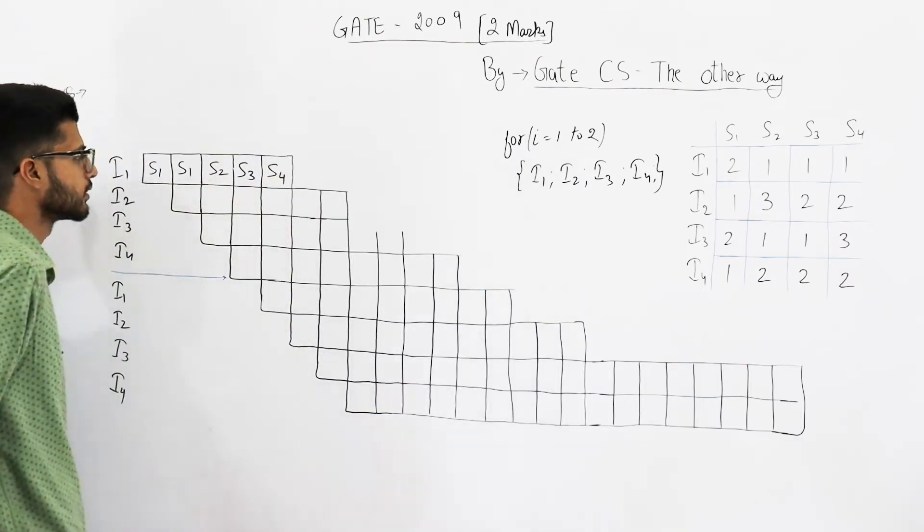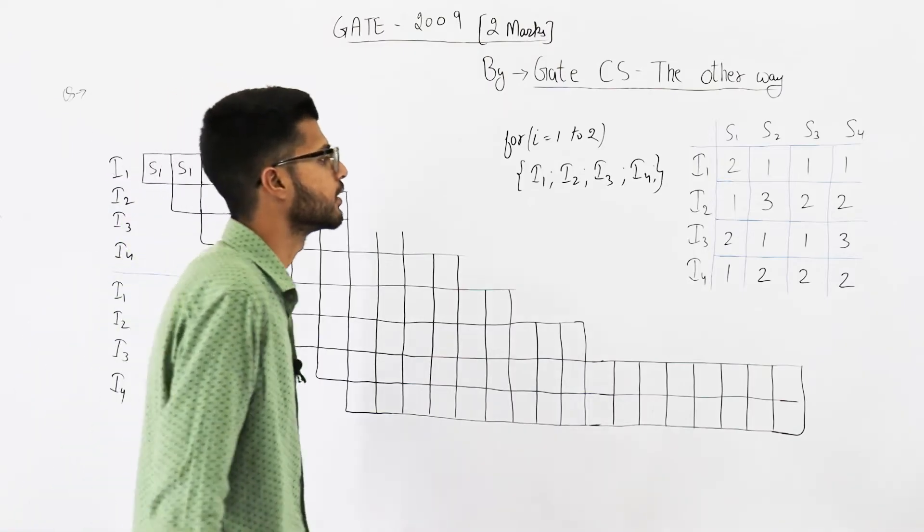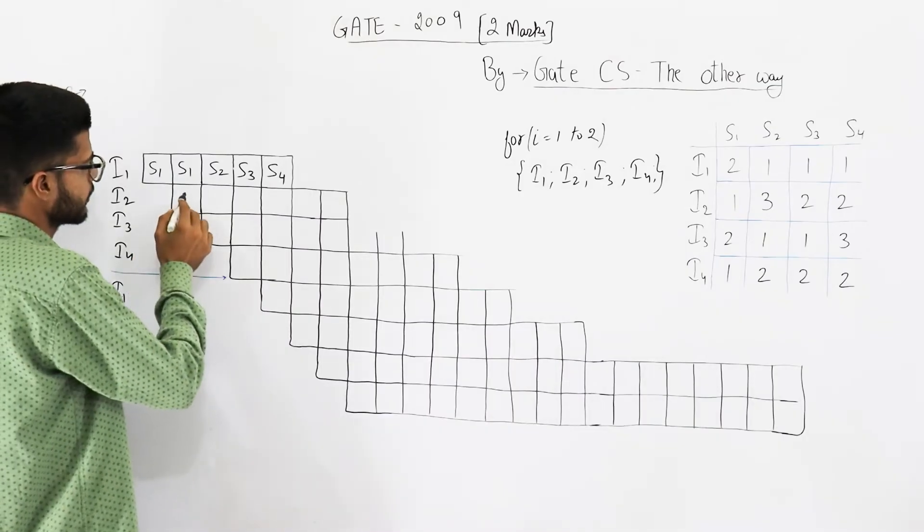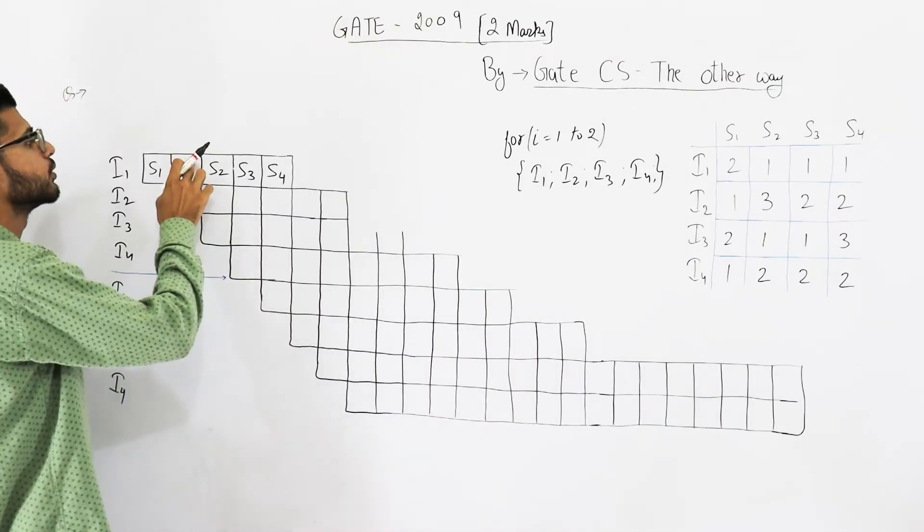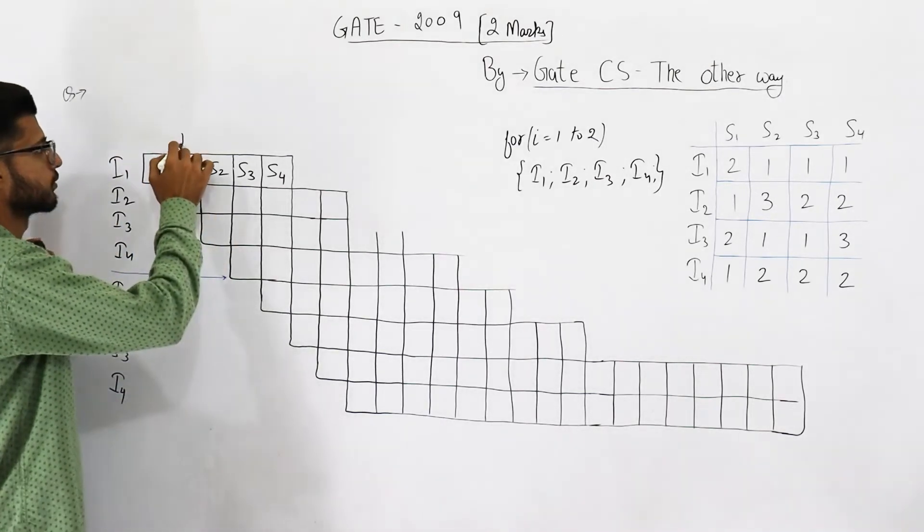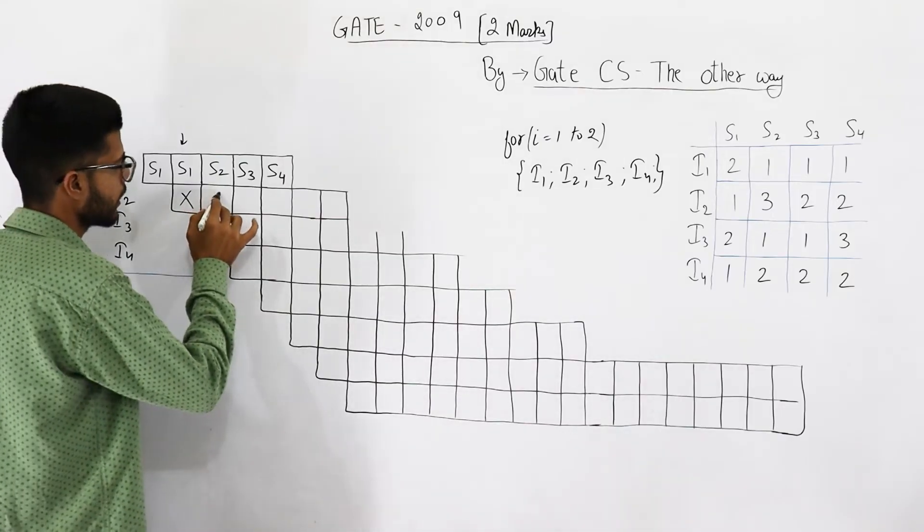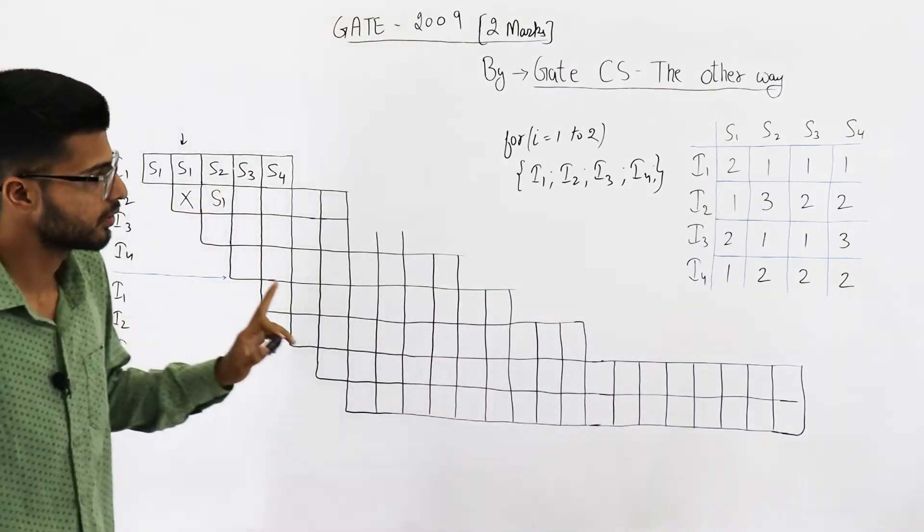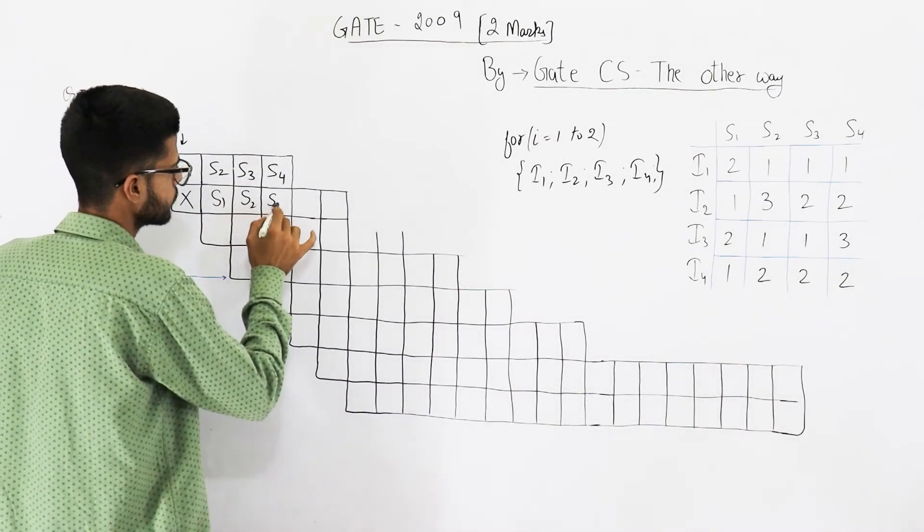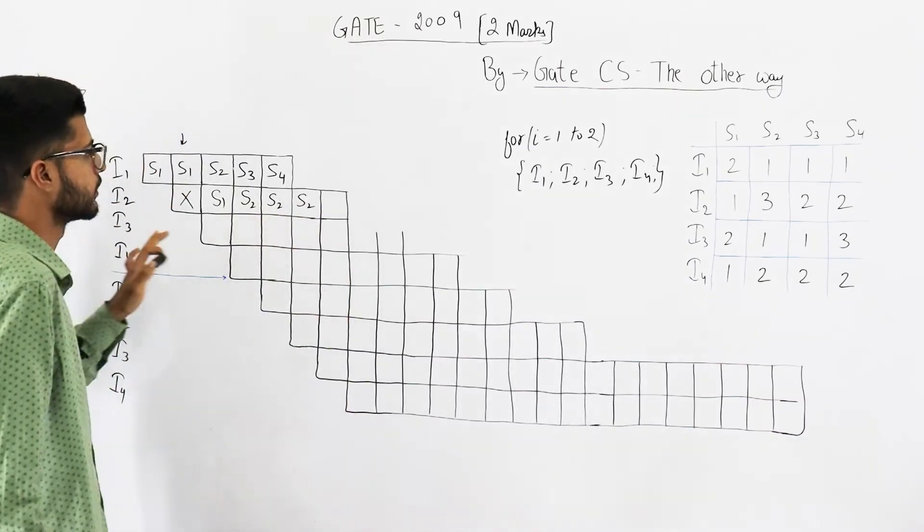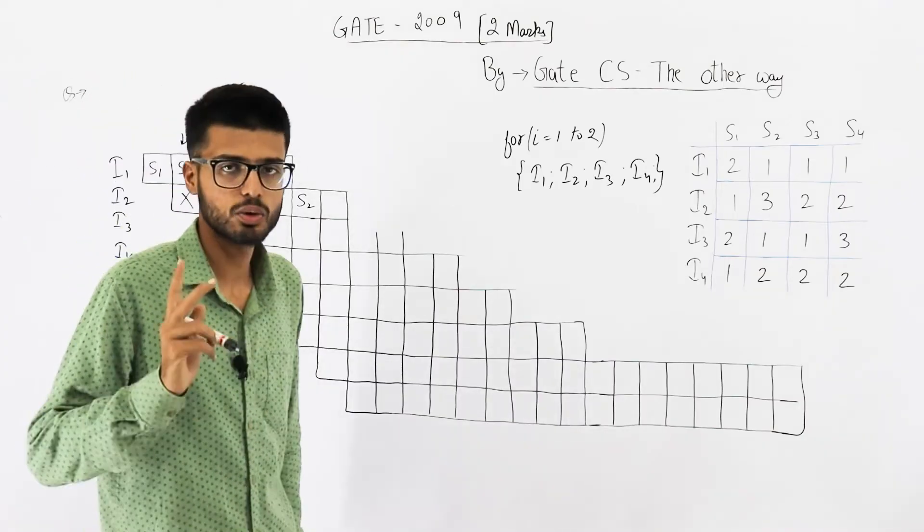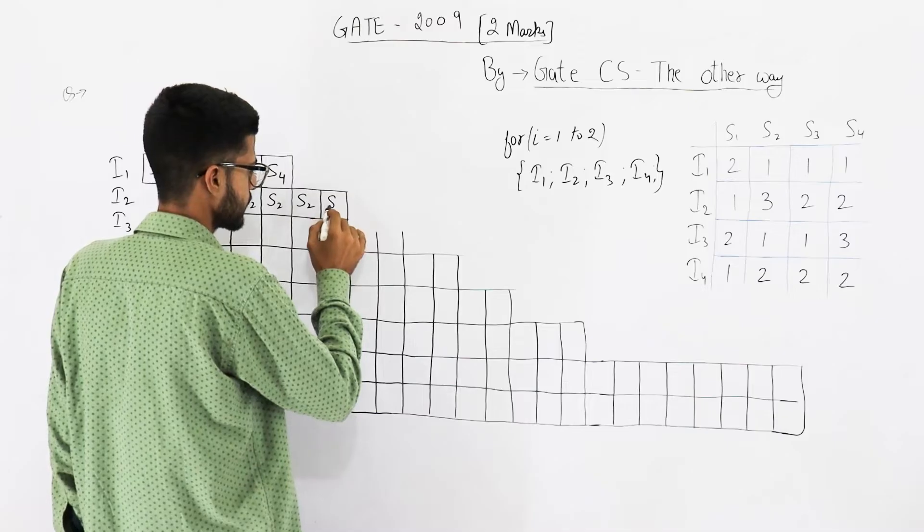This is instruction i1. Now let's try to execute the second instruction which is i2. You cannot execute s1 here because s1 is already being used by instruction one in this clock cycle. So we'll start s1 from here. It requires only one clock cycle of s1, then it requires three clock cycles of s2.